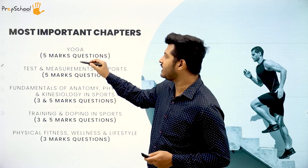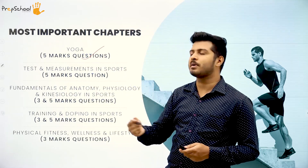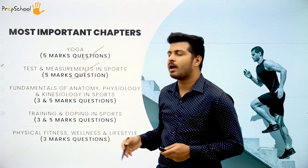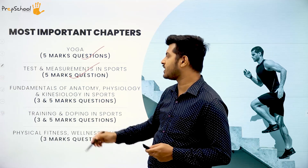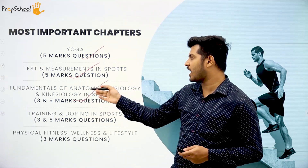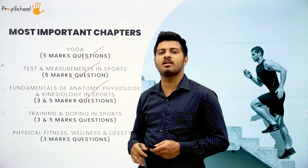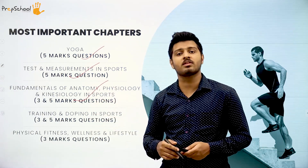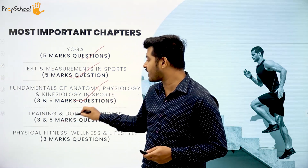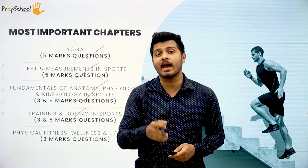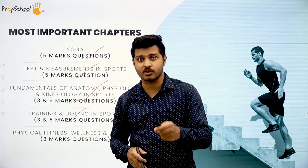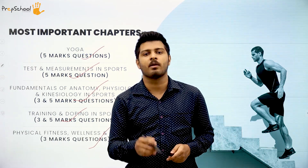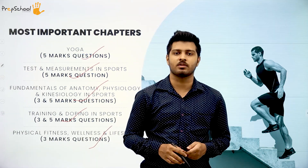The most important chapters are: first, yoga — you generally get a five-mark question from this chapter. Second, tests and measurements — again typically a five-mark question. Third, fundamentals of anatomy, physiology, kinesiology and biomechanics — carrying three and five mark questions. Fourth, training and doping in sports — again three and five mark questions. Fifth, physical fitness, wellness and lifestyle — typically three mark questions.